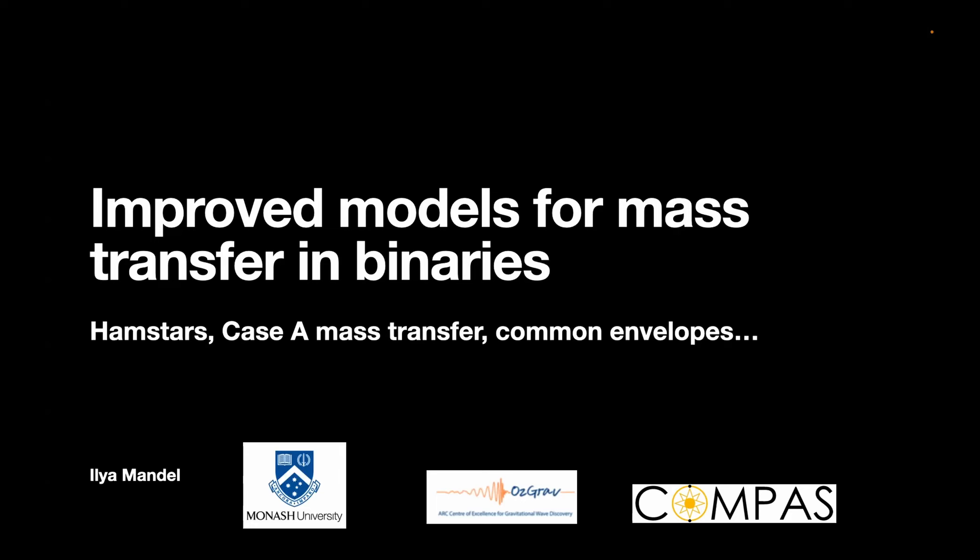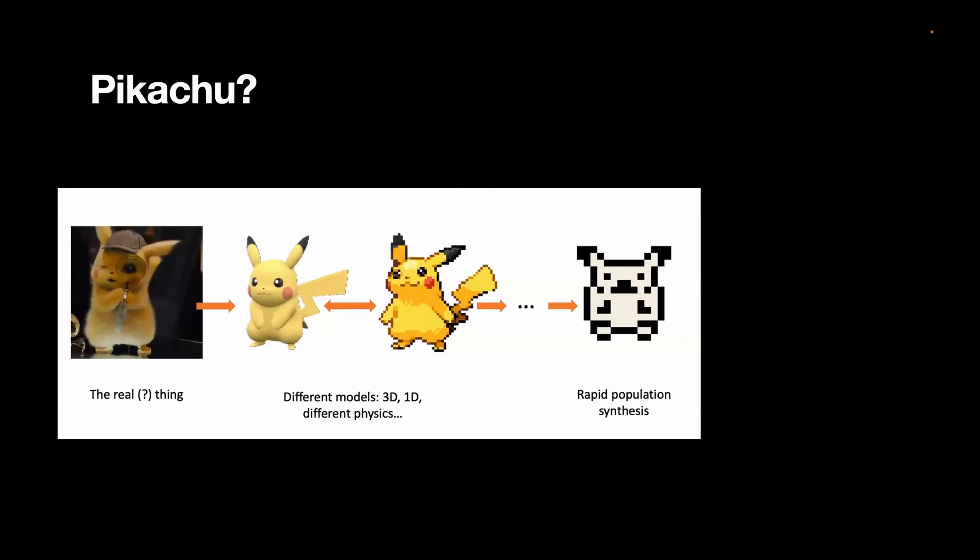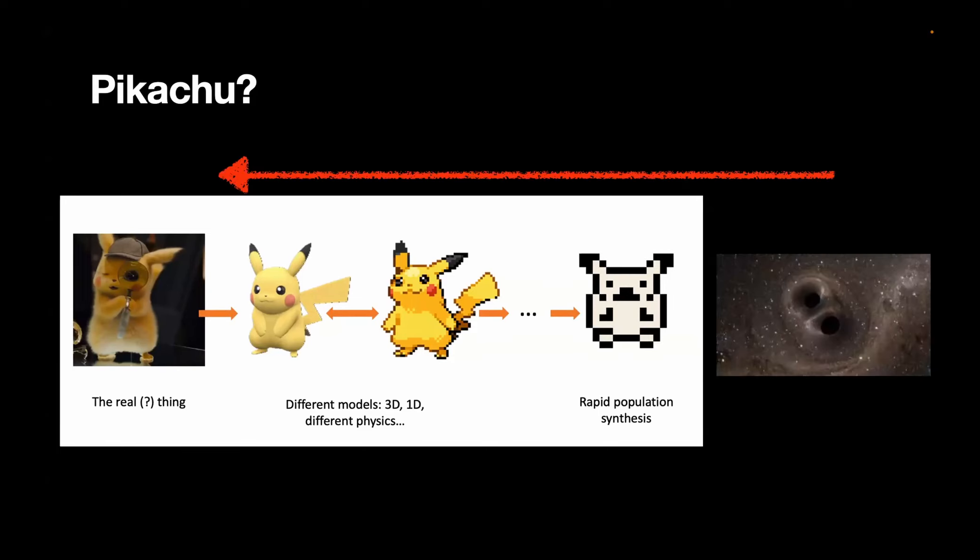But first, I wanted to borrow a slide from Nicholas, who kindly sent me this awesome picture slide. In Nicholas's version, you start out with the real thing and then you go and sequentially approximated with simpler and simpler models. In my personal trajectory in the space, I actually went in the other direction. I started by being interested in binary black hole mergers, no stars involved.